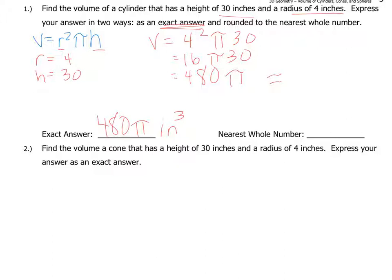And you end up getting a number that's 1507.9644 and it just keeps going. But it's asking you to round to the nearest whole number. So that nearest whole number is in reference to the 7. So you're using this 9 after the decimal to round that up. So it becomes 1508 inches cubed.